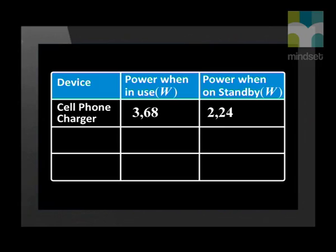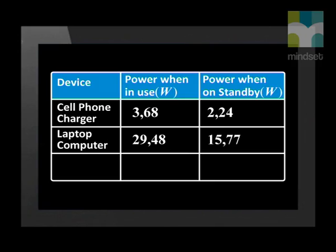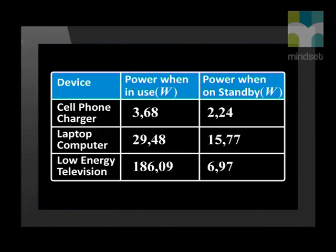Here is a table of some devices and their power ratings while in use and not in use. The average cell phone charger uses 3.68 watts while charging your phone, but still uses 2.24 watts when just plugged in and not being used. A laptop computer uses 29.48 watts while in use, but still uses 15.77 watts while set to sleep mode. A low-energy television uses 186.09 watts when in use and 6.97 watts when off but still switched on at the plug. We can save a great deal of money and energy by turning our electrical devices off when not using them. Standby power can account for about 10% of a family's electricity bill.